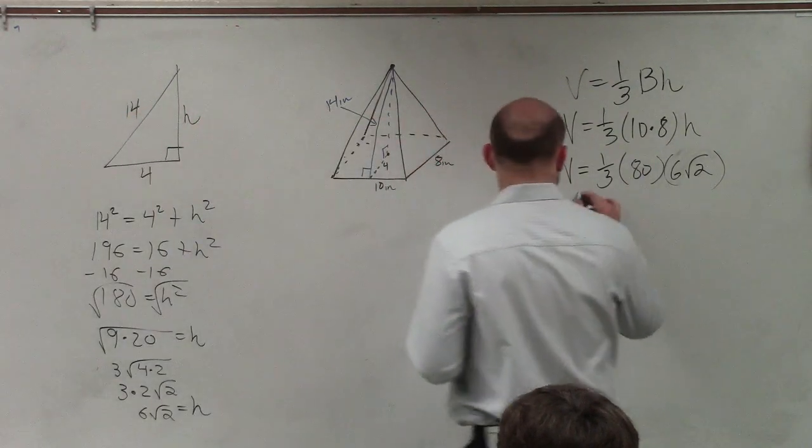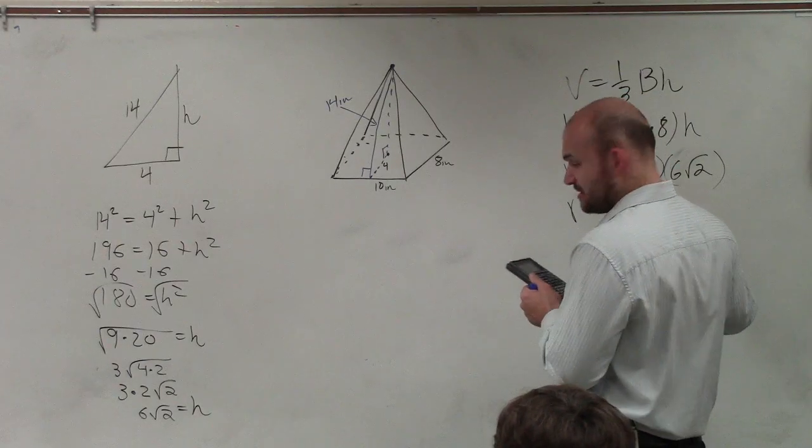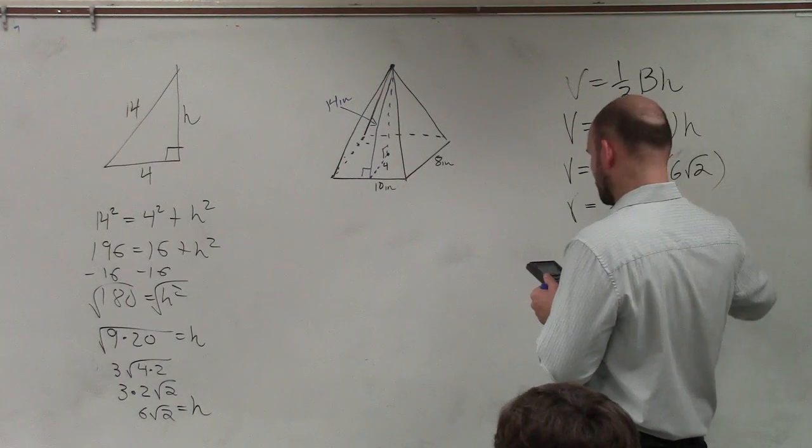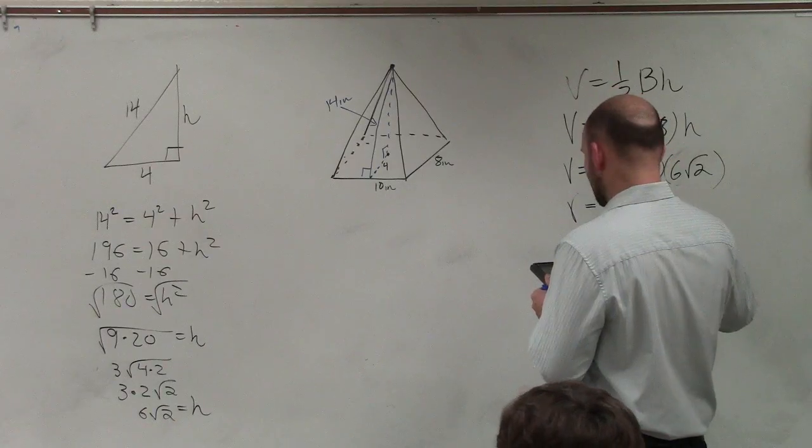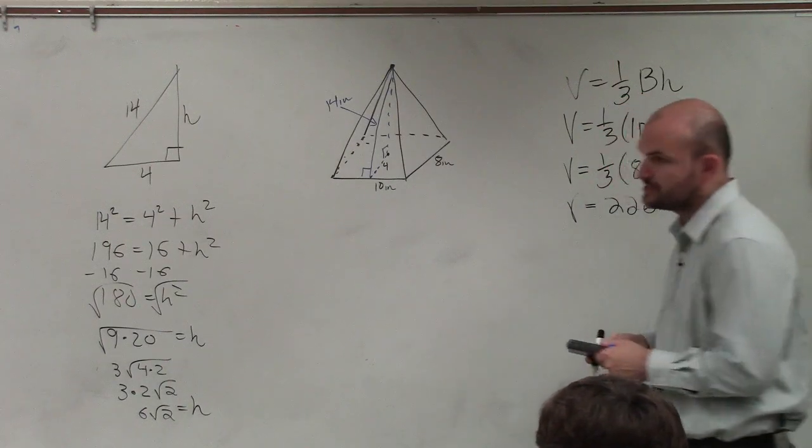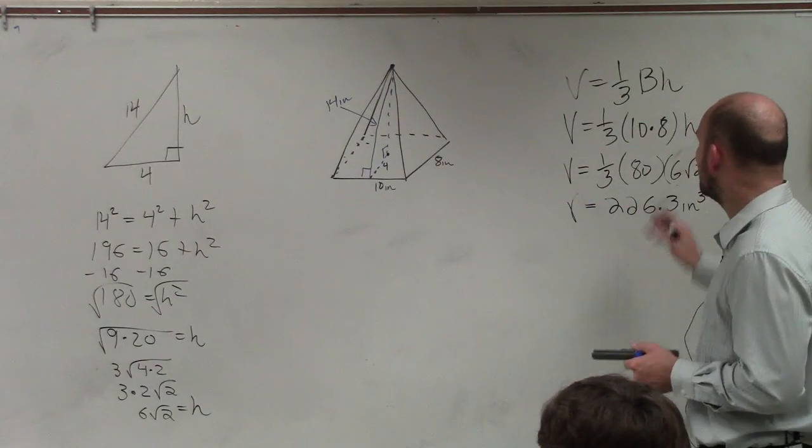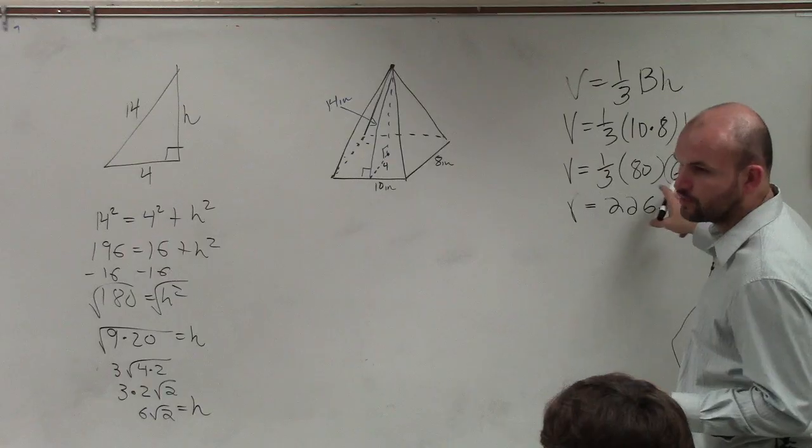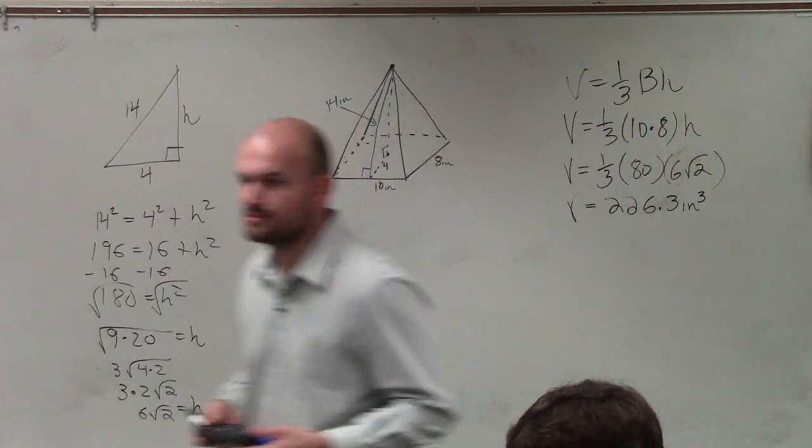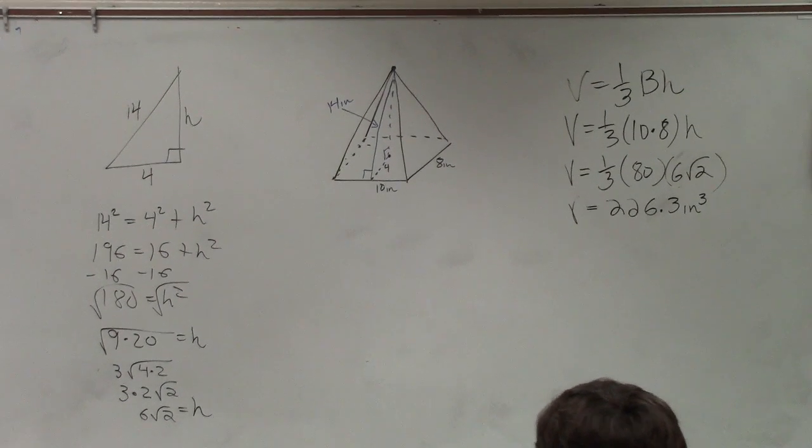And my volume is going to be 226 point, does it say round to the tenth? Yes. 226.3 inches cubed, since we're dealing with volume, it's going to be inches cubed. If you were just to use square root of 180, that would work exactly the same as well, okay? So therefore, ladies and gentlemen, you can give yourself an M, A, T, or H based on that one. However you did, you...